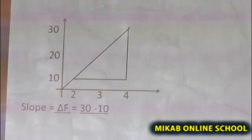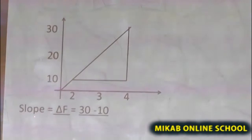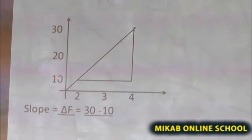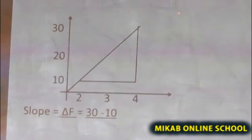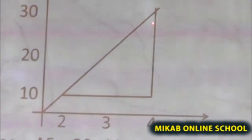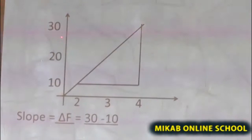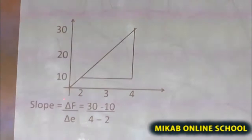Now, if you plot the force against the extension, this is what we have as a graph. You will discover that we have 10, 20, 30 on the vertical axis, and on the horizontal axis we have 2, 3, and 4. Look at the slope we have here. At this particular point we have 10 and 2, and at this particular point we have 30 and 4. The slope gives us the change in F over change in E — that is, change in force over change in extension.